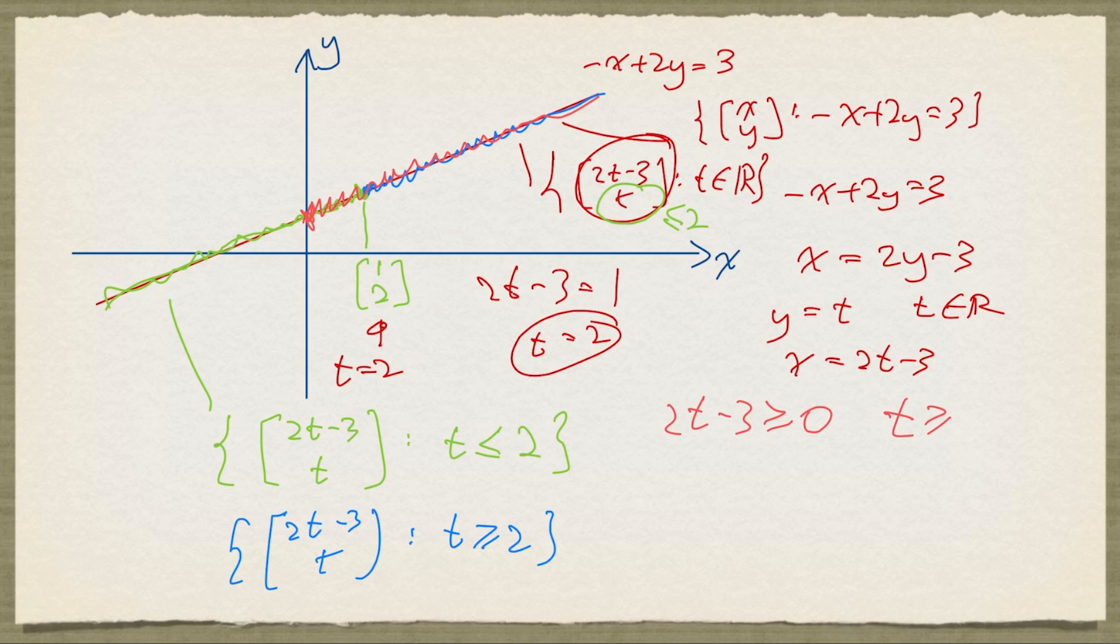That means t has to be at least 3 half. So this portion here is the set of points with coordinates (2t minus 3, t), such that t is at least 3 half.